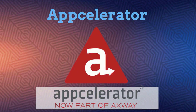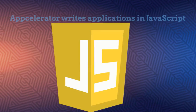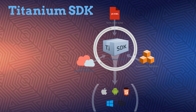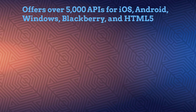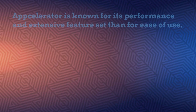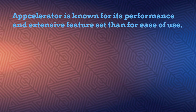Number four: AppCelerator. AppCelerator writes applications in JavaScript and runs them on a native platform using its Titanium SDK. With no hybrid components, this cross-platform development software focuses on producing native apps and offers over 5,000 APIs for iOS, Android, Windows, Blackberry, and HTML5. AppCelerator is known for its performance and extensive feature set rather than for its ease of use.